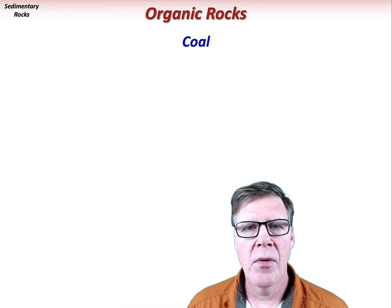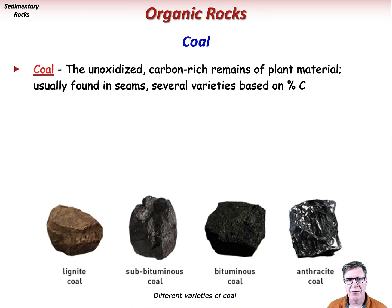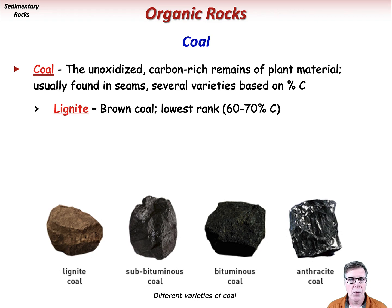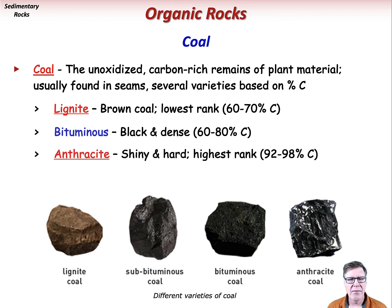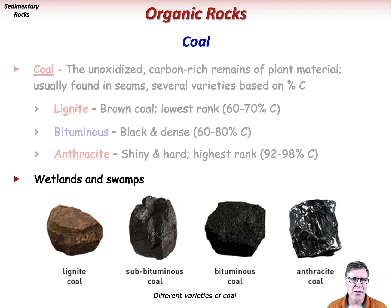Organic rocks like coal are formed from the unoxidized, carbon-rich remains of plant material. Coal is usually found in seams, and there are several different types based on their percentage of carbon. Lignite, or brown coal, is the lowest rank of coal, with 60–70% carbon. Bituminous coal is black and dense, with 60–80% carbon, and is a fairly common type of coal. And then there's the shiny and hard anthracite, having the highest rank, with 92–98% carbon. Technically, anthracite is a metamorphic rock. All of these forms of coal form from the accumulation of organic material in a low-oxygen, reducing environment like wetlands or swamps.